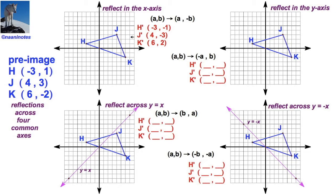Now, how easy is this? Well, let's just plot it. Negative 3, negative 1. So, h-prime is going to be down there. We've got 4, negative 3 down here for j-prime. And k-prime would be 6, positive 2.